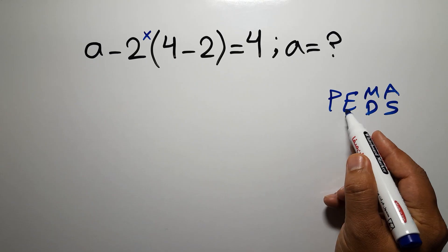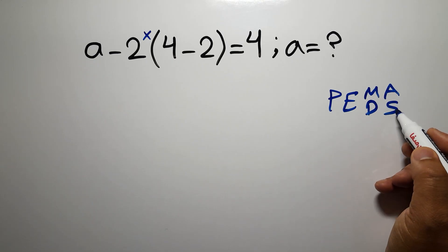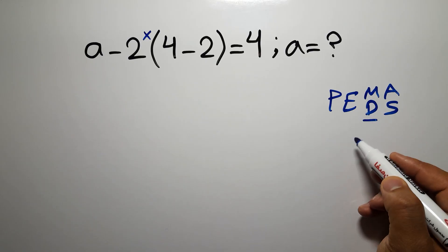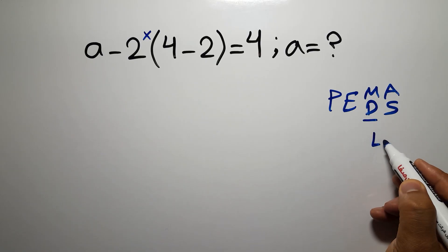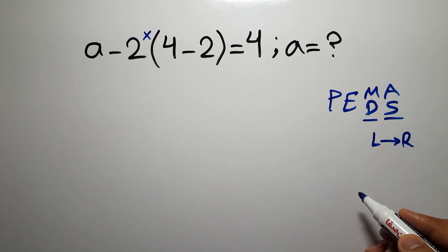First, we have to do parentheses, then exponents, then multiplication or division, and finally addition or subtraction. Remember that multiplication and division have equal priority, and we have to work from left to right. And the same applies to addition and subtraction.